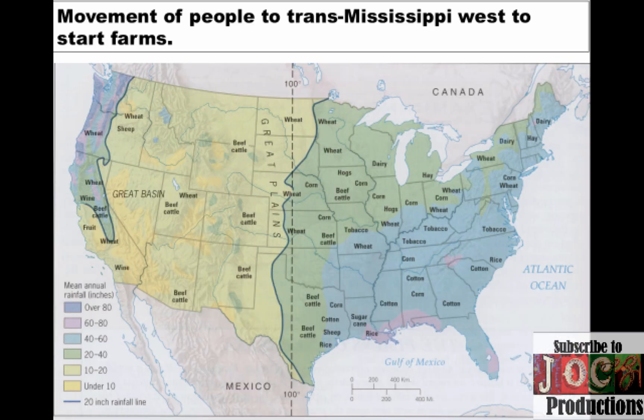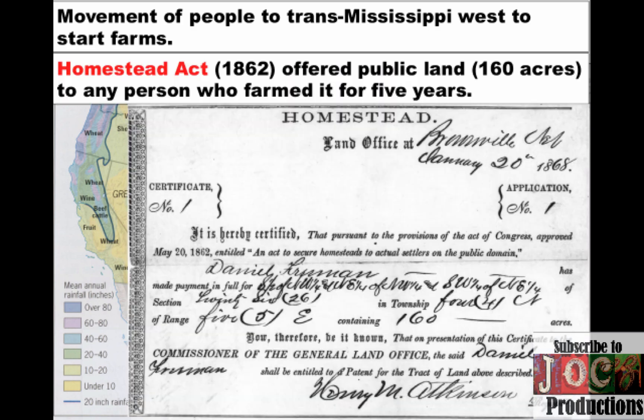Another key part of the economic growth of the West is the movement of people to the trans-Mississippi West — west of the Mississippi all the way to the west coast — to start farms. This was also largely driven by the federal government. The Homestead Act, passed during the Civil War in 1862, offered public land up to 160 acres to any person or family who farmed that land for five years, purchasable for a very small fee. A huge number of people moved west seeking this economic opportunity encouraged by the federal government.